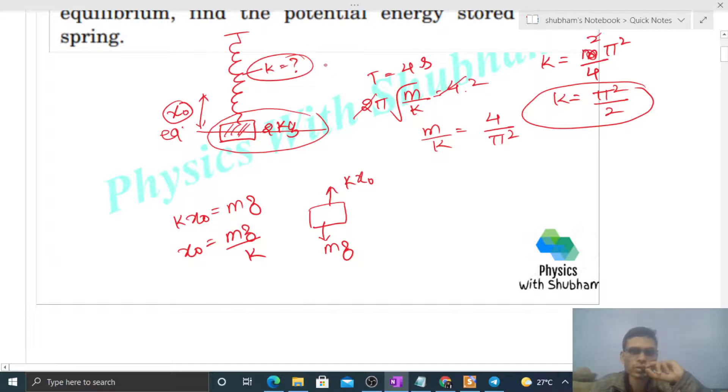What we have to find out is the potential energy. Potential energy of the spring when elongation is x₀ is half of k into x₀². So we need to find out this value.